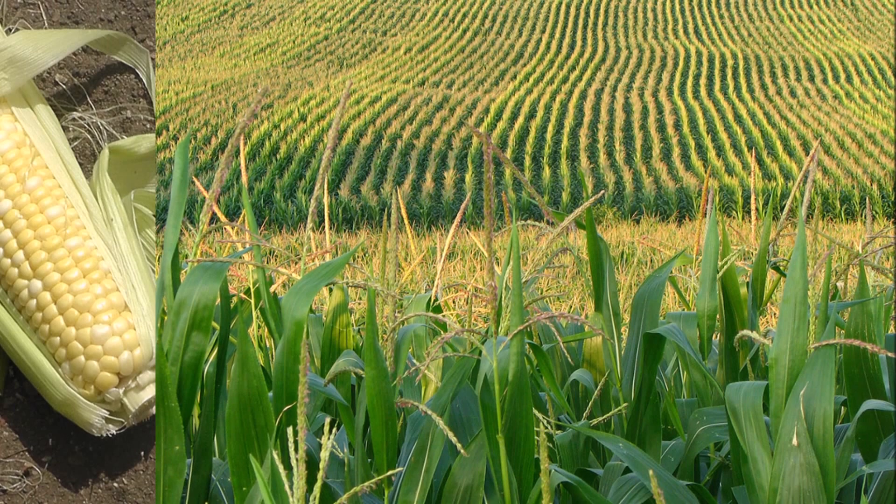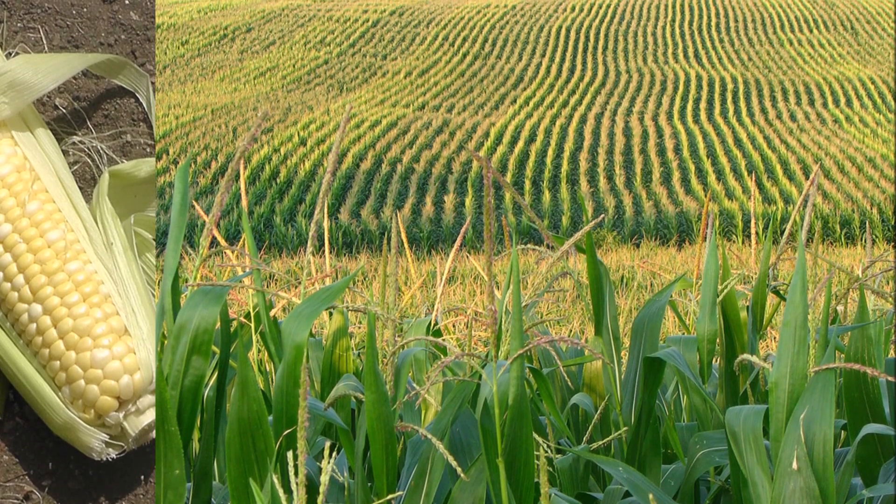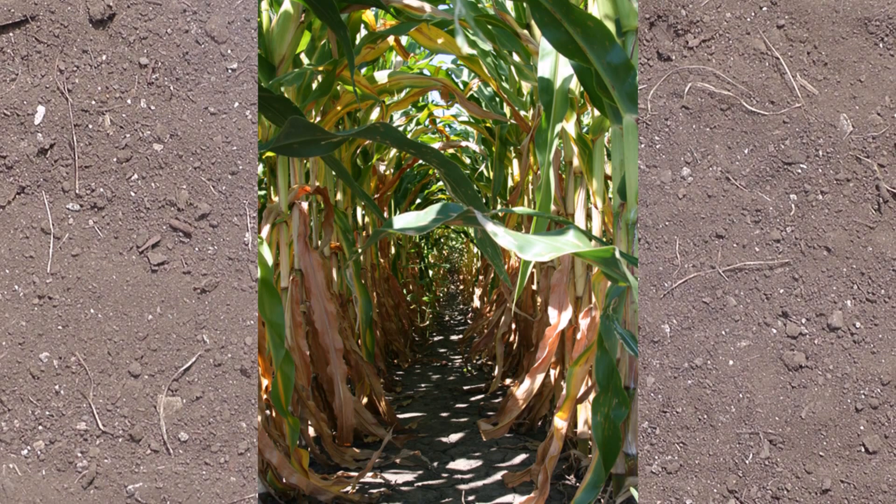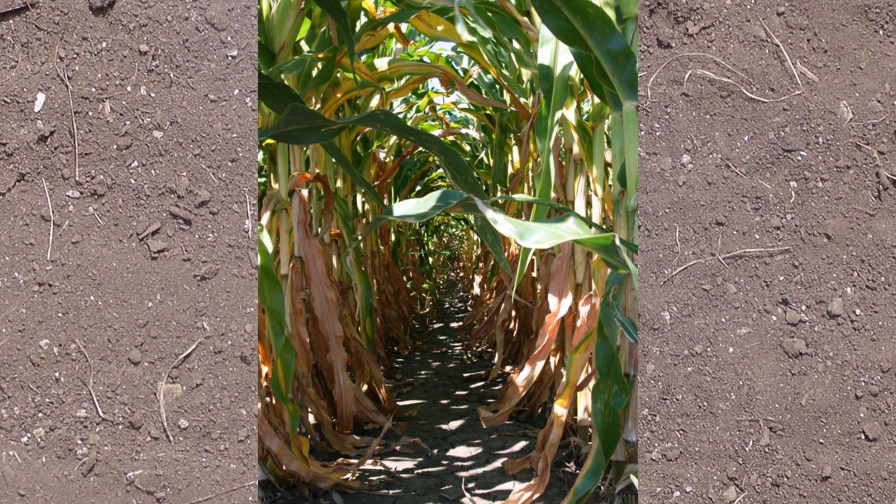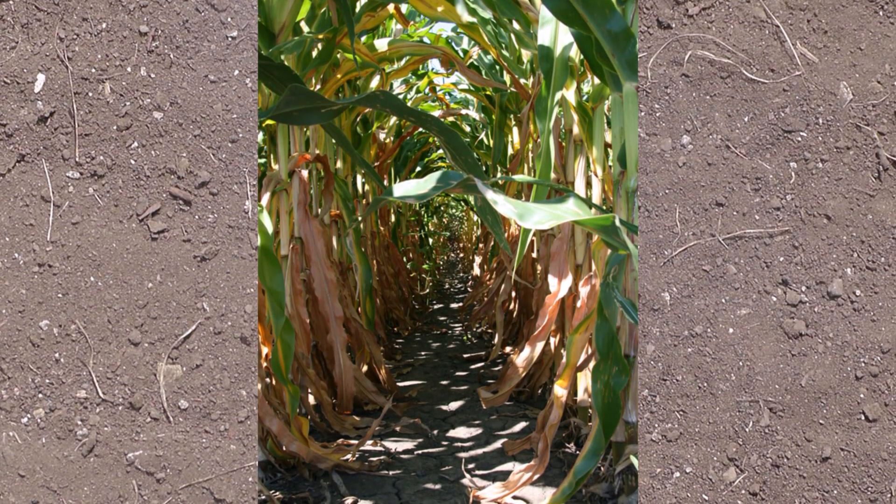This is a pretty typical view during the summer across fields in the Corn Belt of the U.S. But this is a not so typical view. From ground level we can see the neat, orderly rows of corn separated by soil that's pretty much completely free of weeds.